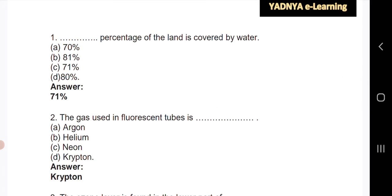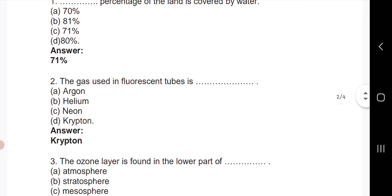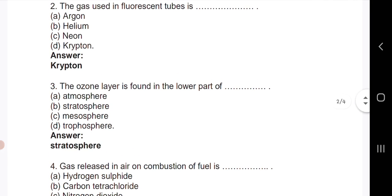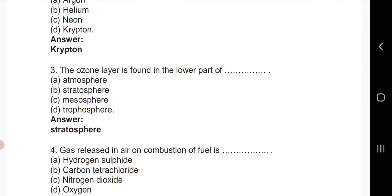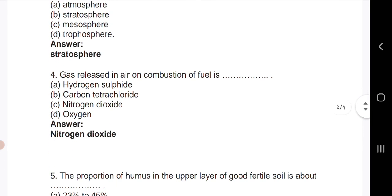Next question: choose the correct alternatives. 71 percentage of the land is covered by water. The gas used in fluorescent tubes is krypton. The ozone layer is found in the lower part of stratosphere. Gas released in air on combustion of fuel is nitrogen dioxide.